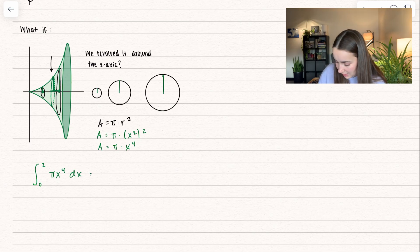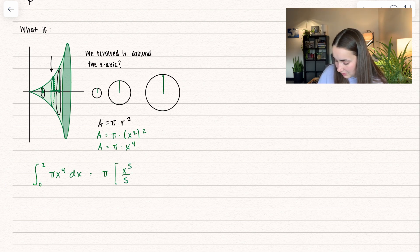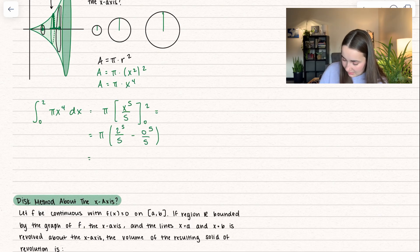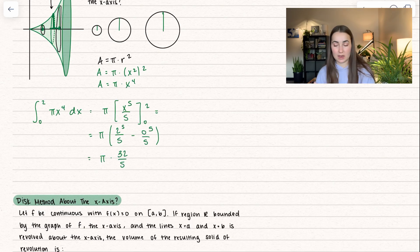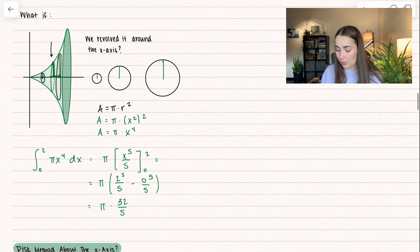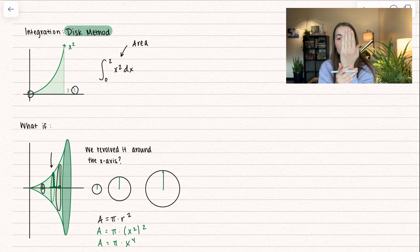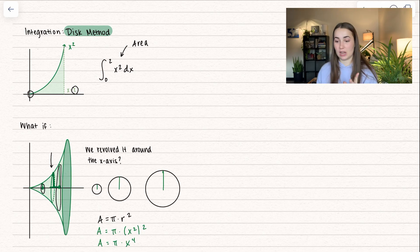Let's go ahead and rewrite this. We have pi on the outside and we can take the antiderivative of x to the power of 4, so that becomes x to the power of 5 divided by 5. We're doing this all the way between 0 and 2, so we can go ahead and plug in upper minus lower. This ends up being pi times 32 over 5, and this represents the volume of that 3D shape. We took our 2D area, circled it all the way around the x-axis to create a 3D shape.